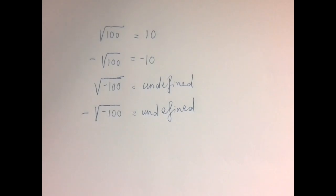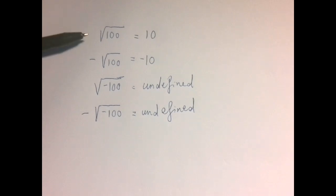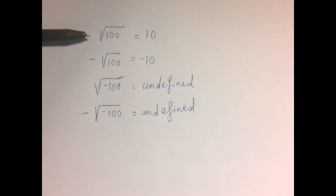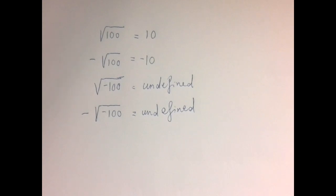One comment here: both 10 and negative 10 square to plus 100, so negative numbers don't have square roots, and there are two candidates for the square root of a positive number, where we always agree to pick the positive one. So we have more than one candidate for positive numbers, and no candidate for negative numbers.